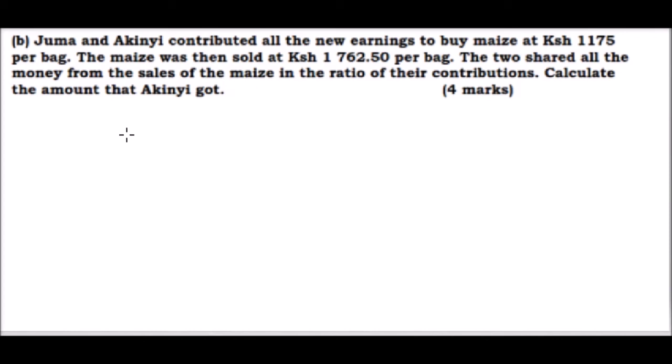The total earnings was 14,100 and a bag was costing 1175. When you divide that you can get the number of bags they were able to buy with the money they got. When you divide that you get they were able to buy 12 bags of maize.